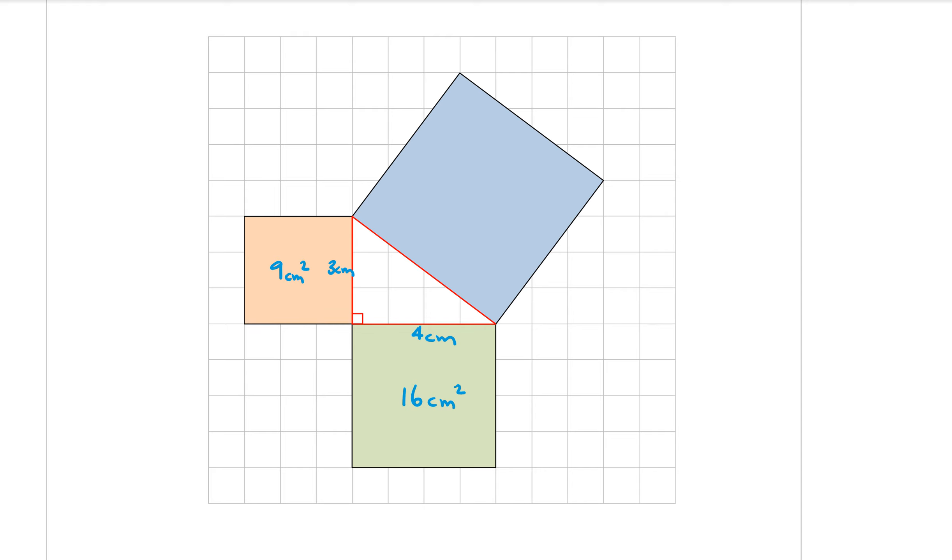Finally, for the hypotenuse, the longer side, you'll need to use your ruler for this one, but that side should measure to be five centimetres long. And five times five for the area of the square is twenty-five centimetres squared.